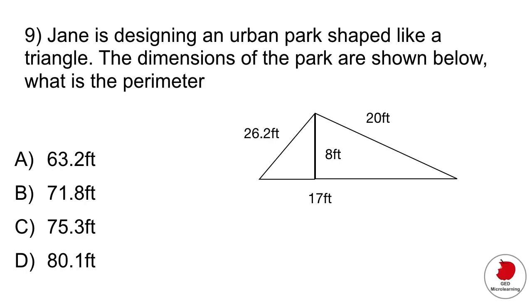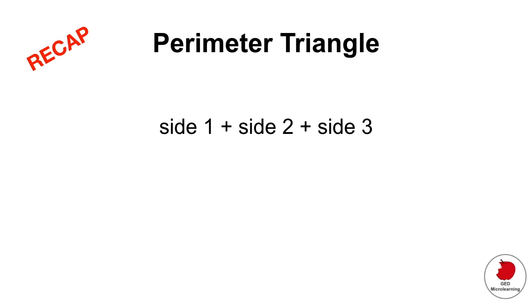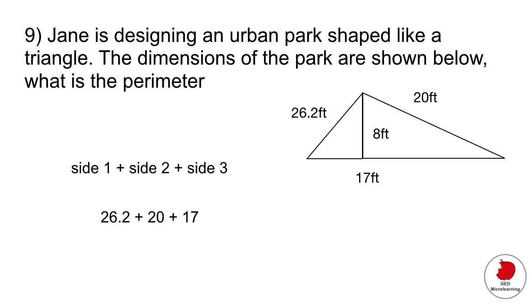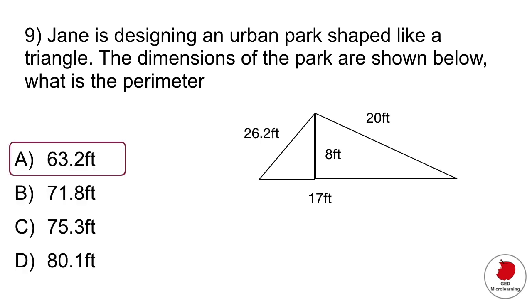Question nine is a geometry question. It says Jane is designing an urban park shaped like a triangle. The dimensions of the park are shown below. What is the perimeter? Let's first remind ourselves of what a perimeter means. The perimeter means the distance surrounding that figure. In the case of a triangle you would have to add all the sides of the triangle to get the perimeter. So with that knowledge it's very easy. All you have to do is take those three numbers for each of the sides, add them up, and that gives you option A.